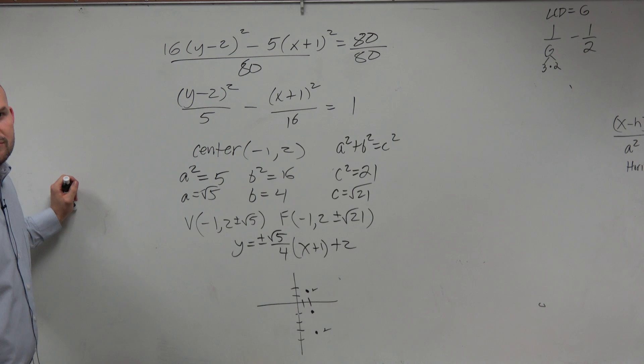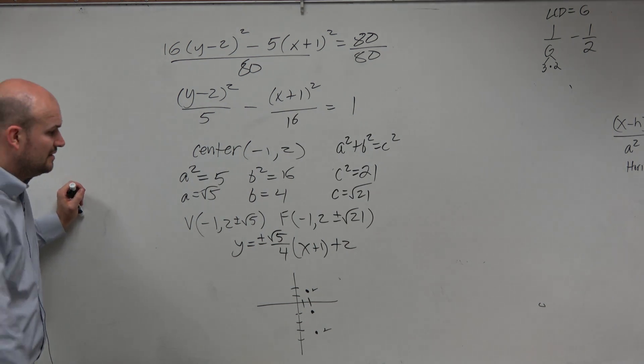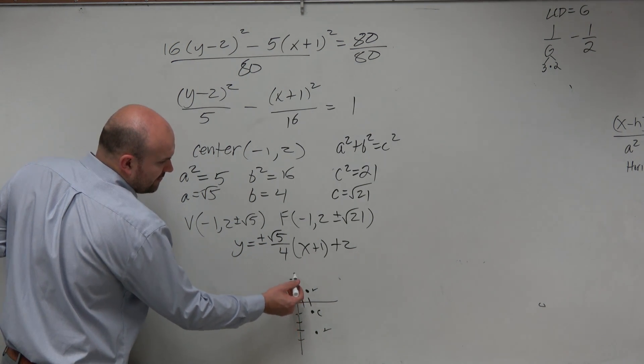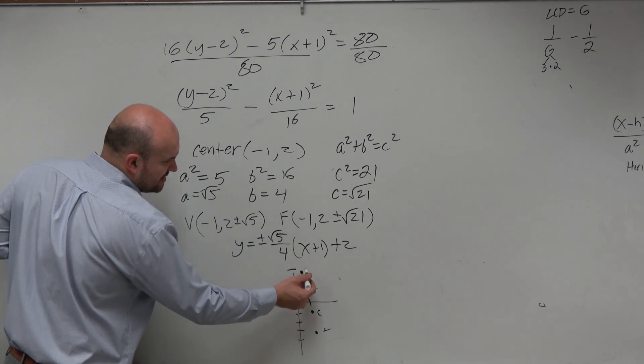The square root of 21, that most resembles what? 4 and some change, right? So from my center, I can go up 4, 1, 2, 3, 4, between 4 and 5, and say that's my foci. And then I can go down 4 and change, 1, 2, 3, 4.